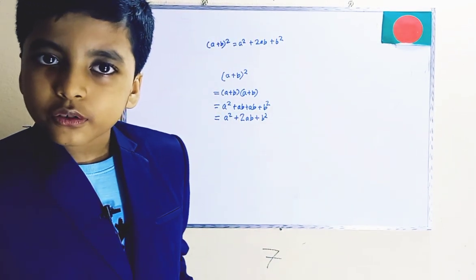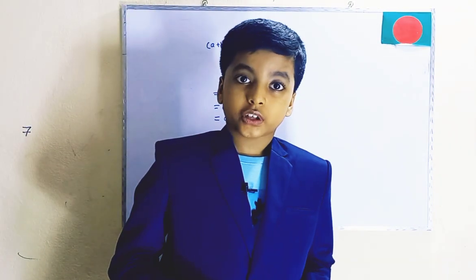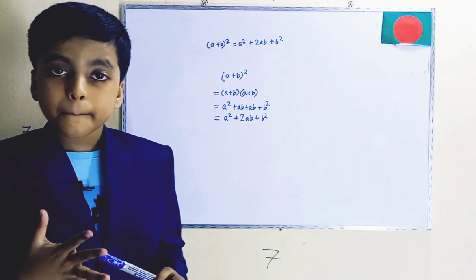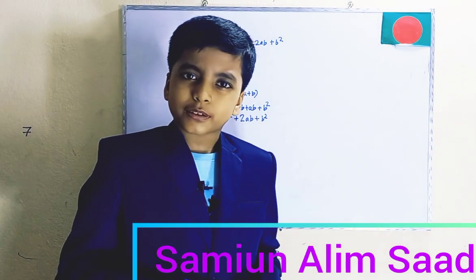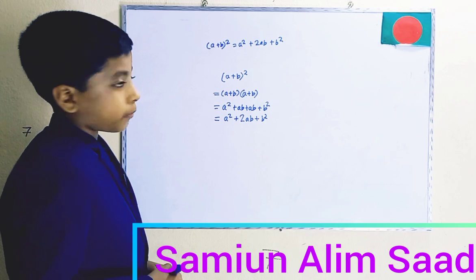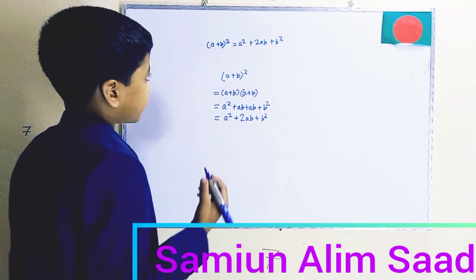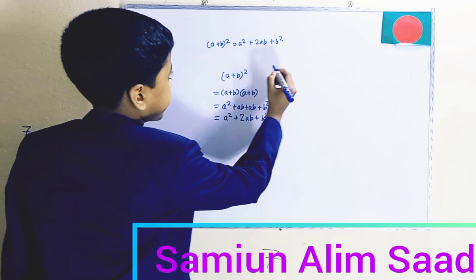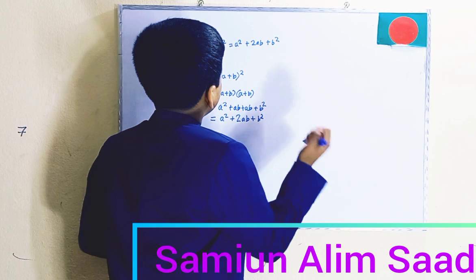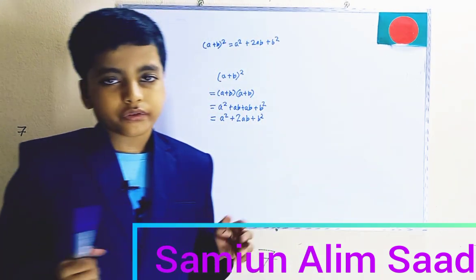Now, what about the other formula proof? That (a+b)² is equal to (a−b)² + 4ab — that's what I meant. Next we'll prove that formula and write it out. Well, maybe not in this video — we'll do it in one of the future videos.